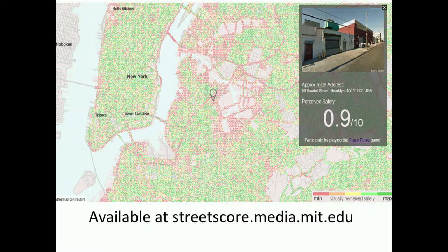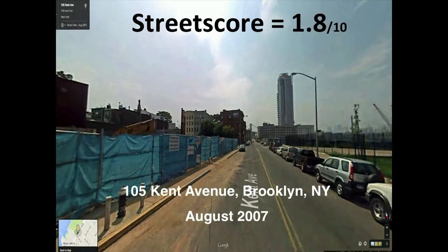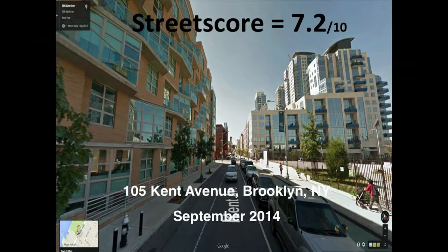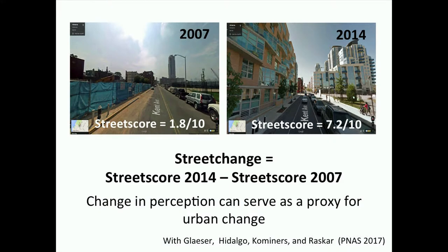We scored many street blocks from different cities, available on an interactive map on our website where you can click on a location and see its perceived-safety score. To quantify change, we computed the Street Score for each image in our dataset — one from 2007 and one from 2014 — and computed the difference. For example, one location's score went from 1.8 to 7.2. Our assumption is that this change in perception serves as a proxy for physical urban change: if perception goes up, the place has improved physically; if it goes down, the place has declined.